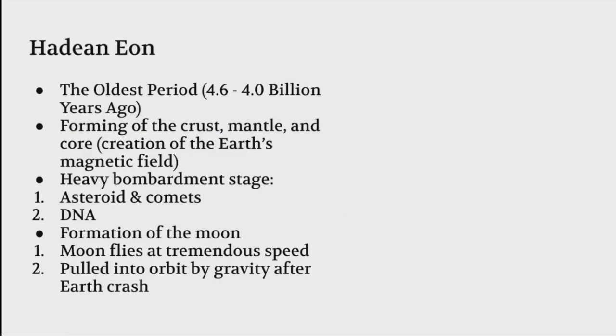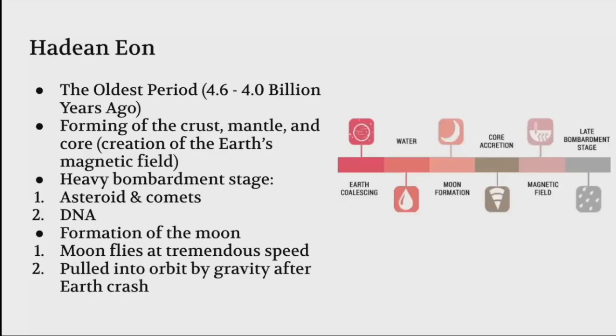During this stage there was a heavy bombardment stage, which means asteroids and comets were flinging themselves relentlessly at Earth. The good thing that came out of this was a chemical change and the formation of DNA. There was also the formation of the moon, which flies at tremendously fast speed and was pulled into orbit by gravity after it crashes into Earth.